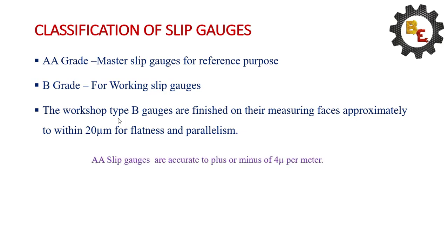AA slip gauges are accurate plus or minus 4 microns per meter. A grade is guaranteed up to plus or minus 4 microns.